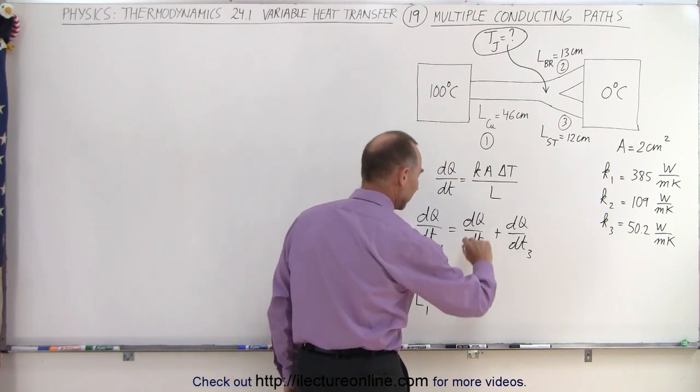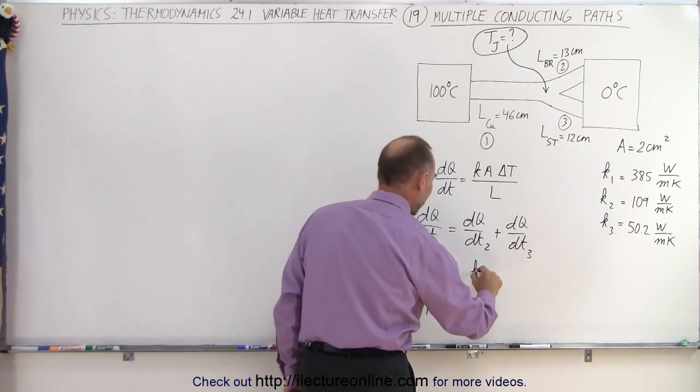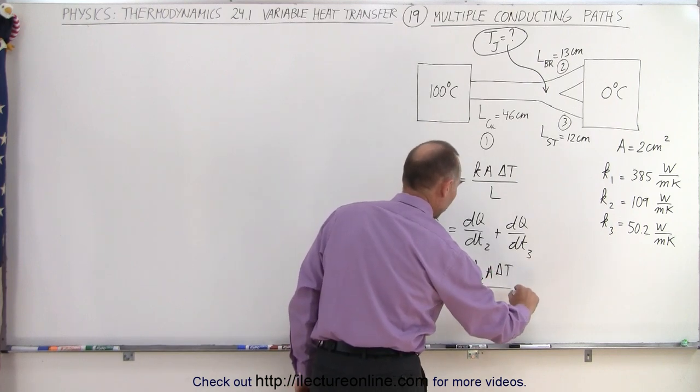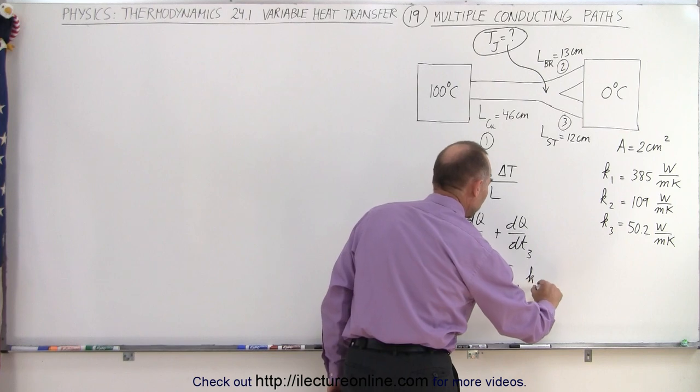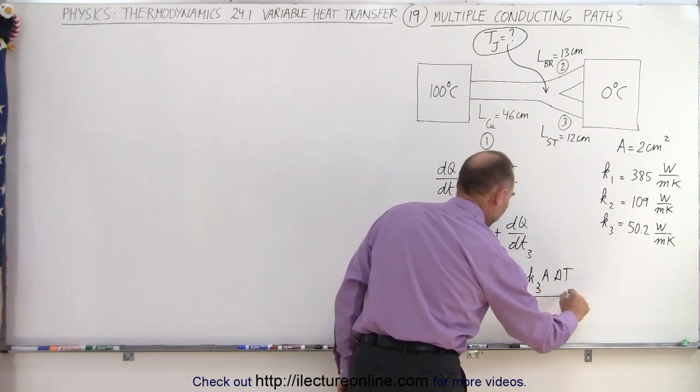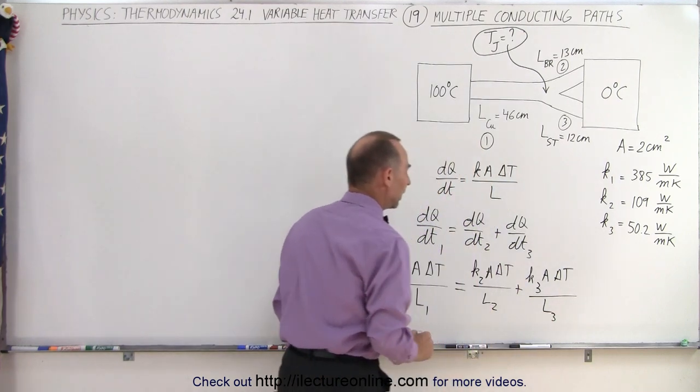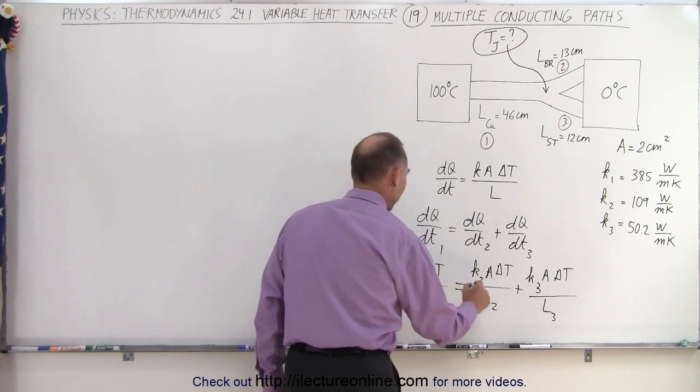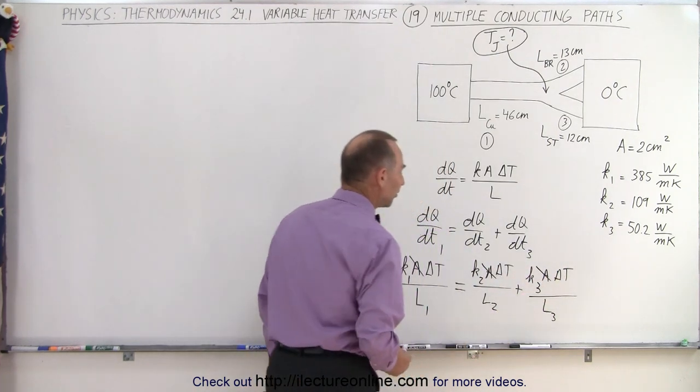This equals K2 A times delta T divided by L2 plus K3 A delta T divided by L3. Right away we realize since the areas are the same for all three, the area cancels out on both sides.